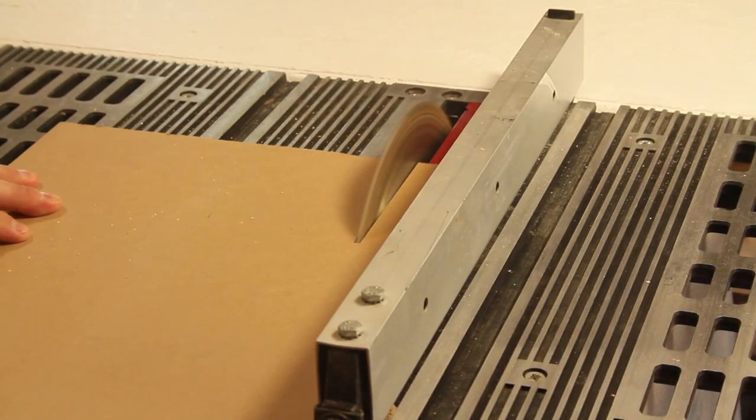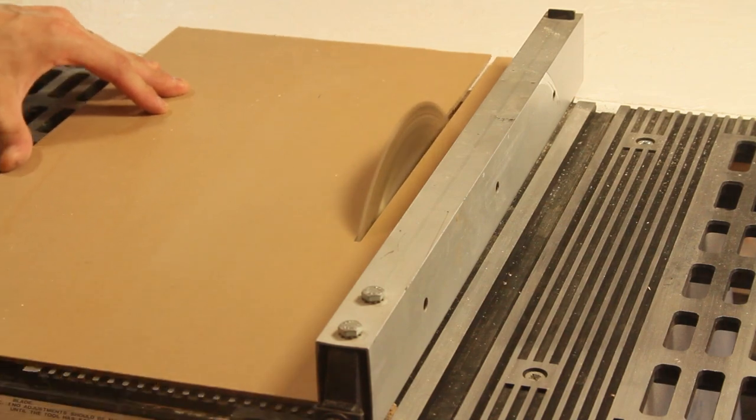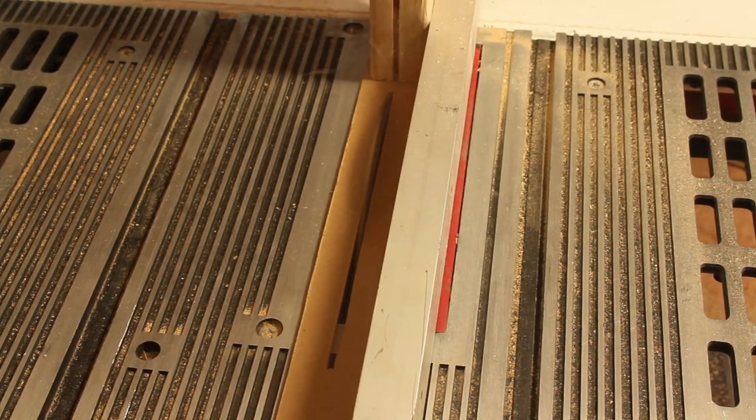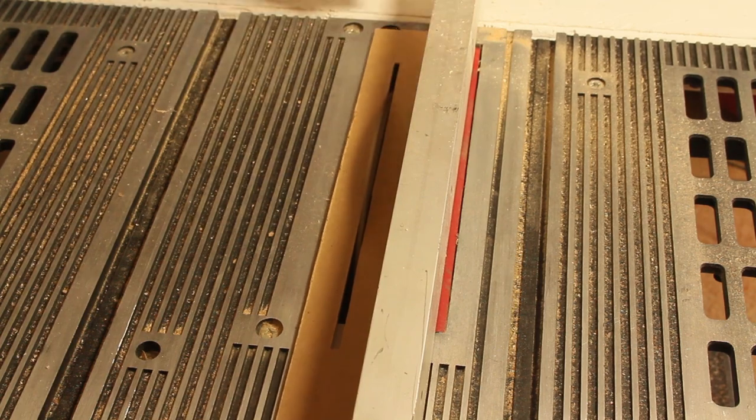I'm cutting a scrap piece of 1/8 inch hardboard into a strip about 2 inches wide and 18 inches long. Then I'll adjust the saw to cut a groove in the center, stopping about 1-1/2 inches from the ends.